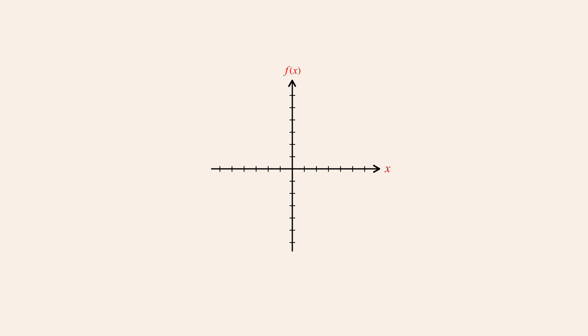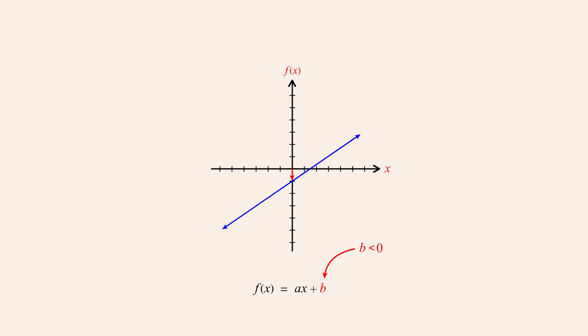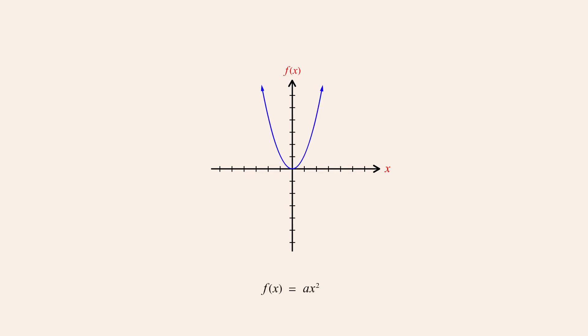The reason h and k correspond to the coordinates of the vertex can be understood by thinking about how graphs can be mathematically shifted up and down or left and right. To shift the graph of a function vertically, we simply add a constant value to the function. For example, when we studied the function for a line, ax plus b, we saw that when b is zero, the graph passes through the origin, and when b is not zero, the graph is shifted b units up or down depending on whether b is positive or negative. Likewise, the graph of ax-squared is a parabola whose vertex is at the origin, and it can be shifted up or down by adding a constant k.